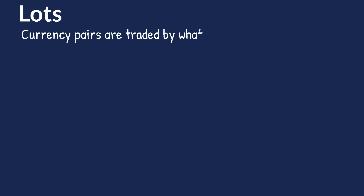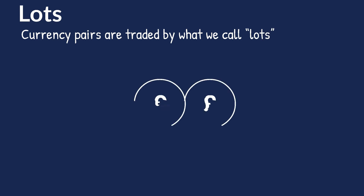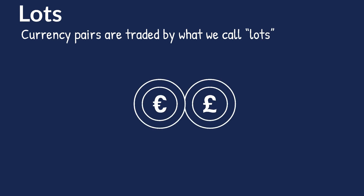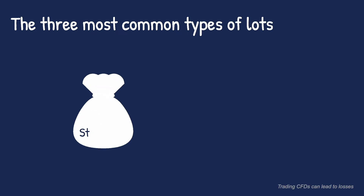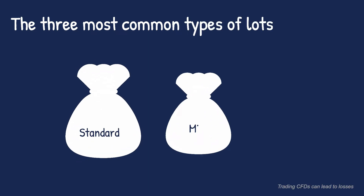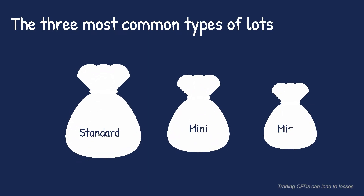Currency pairs are traded by what we call lots. A lot is the amount of the currency pair that you're buying or selling. The three most common types of lots are the standard, the mini, and the micro lot.